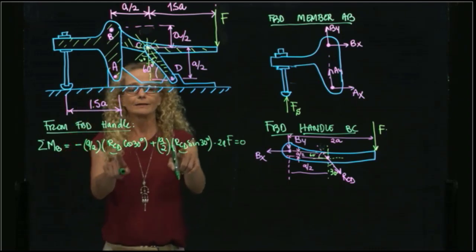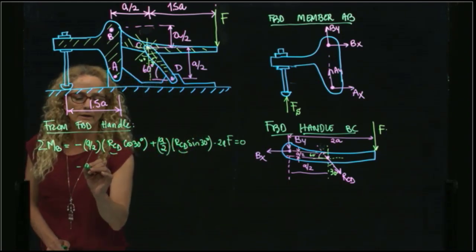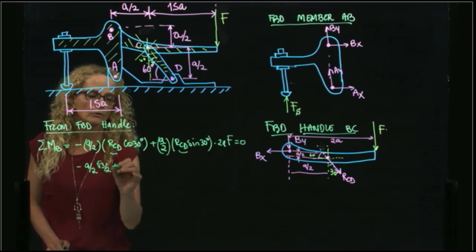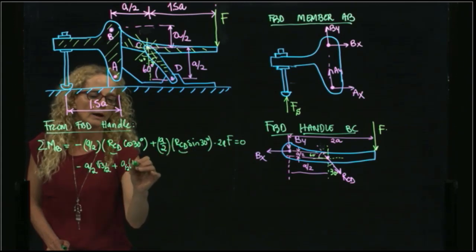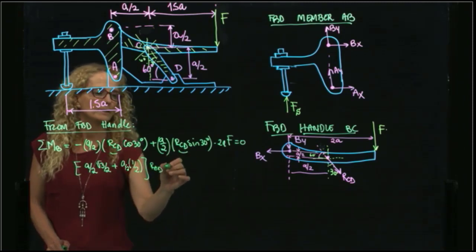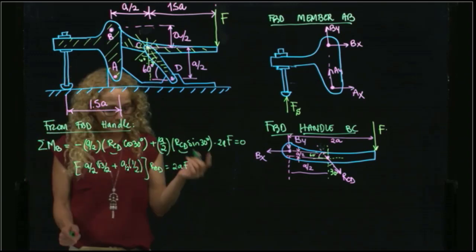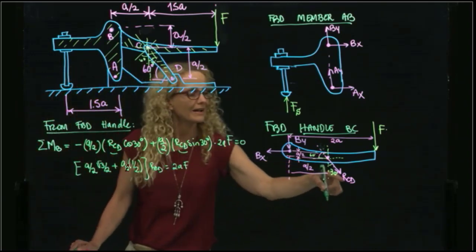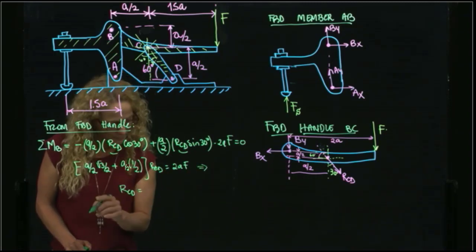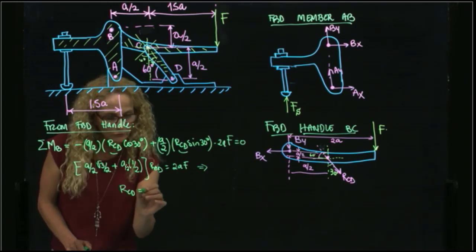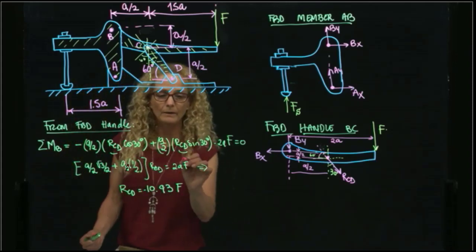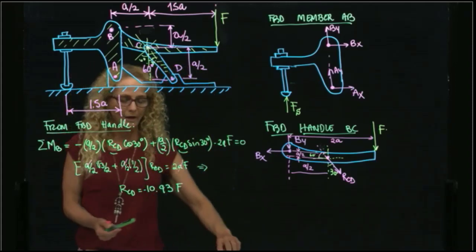I can write this component: 1.5A cosine of 30 equals square root of 3 over 2, plus 1.5A sine of 30. All that will multiply RCD and equals 2AF. Finally, I am able to find the reaction CD in terms of F, and I get that the reaction equals 10.93F. The values of A cancel out because they are in both sides of the equation.